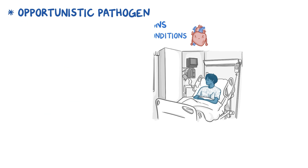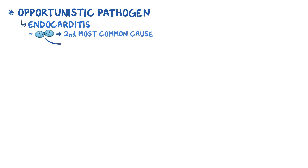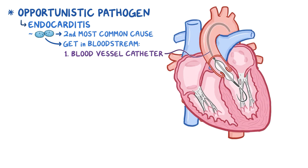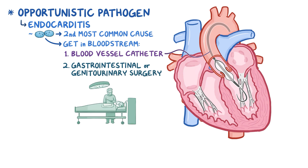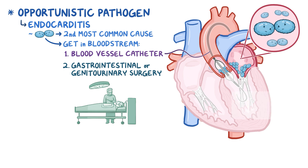Under these circumstances, enterococci mainly cause infective endocarditis. In fact, Enterococcus is the second most common cause of infective endocarditis overall. Enterococci can get into the bloodstream by direct inoculation through a blood vessel catheter, or following gastrointestinal or genitourinary surgery. From the bloodstream, enterococci reach the heart and stick to the heart valves, forming bacterial vegetations, most often when there is underlying damage to the mitral or aortic valves.